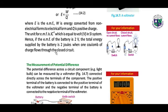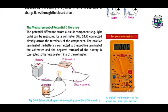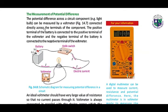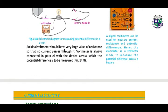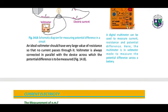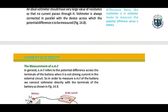How can we measure the potential difference? With the help of an instrument called a voltmeter, connected directly to the terminals of the component. The positive terminal of the battery is connected to the positive terminal of the voltmeter, and the negative terminal of the battery is connected to the negative terminal of the voltmeter. An ideal voltmeter should have a very large value of resistance so that no current passes through it. The voltmeter is always connected in parallel with the device across which the potential difference is to be measured.